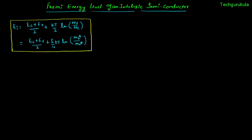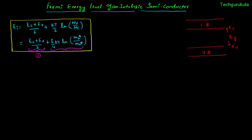The question is where does Ei fall in the energy band diagram. The top band is the conduction band and the bottom band is the valence band, with the difference between the bottom edge of the conduction band and the top edge of the valence band called the forbidden energy gap Eg. The expression for Ei has two terms: the first is (Ec plus Ev) over 2, representing the midpoint of the energy band gap, and the second is (3/4)kT times ln of the ratio of effective mass of hole to electron.